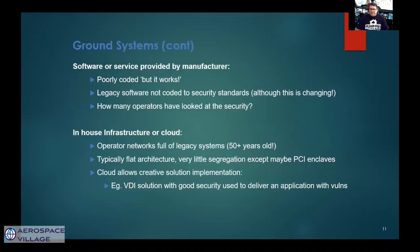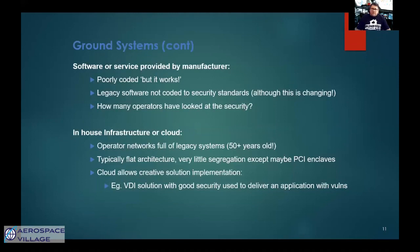How many operators have looked at the ground system software from an attacker's perspective? Have they looked for weaknesses, and combined this with the threat model overlaid on the existing network architecture? A lot of airline networks have little, if any, segregation. So if the corporate network was compromised, could someone pivot into the ground systems and put your aircraft at risk? Conversely, could weaknesses in this software introduce new attack vectors that could be used to pivot into the corporate network? These are all things that operators really need to consider.